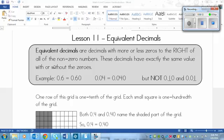So here in the gray it says equivalent decimals are decimals with more or less zeros to the right of all of the non-zero numbers. These decimals have exactly the same value with or without the zeros.